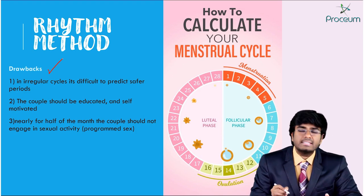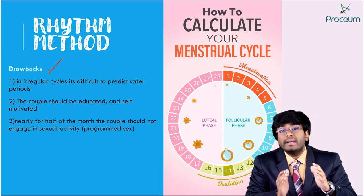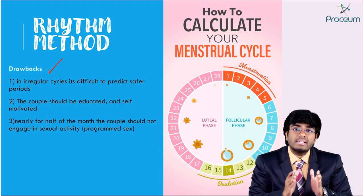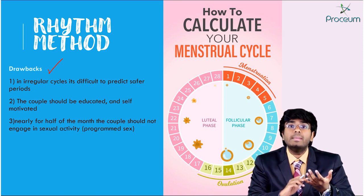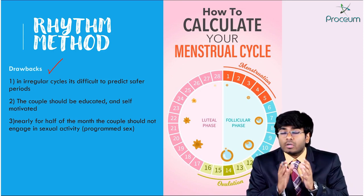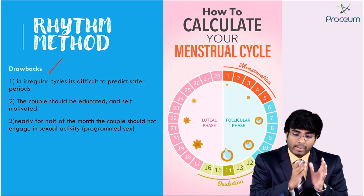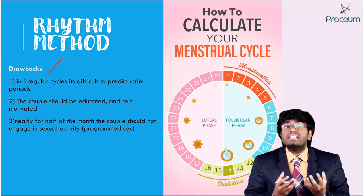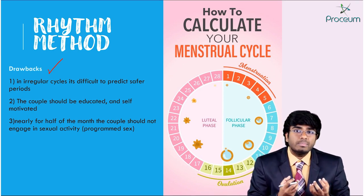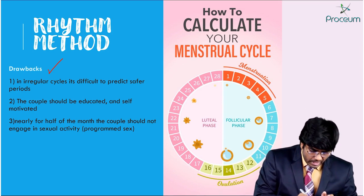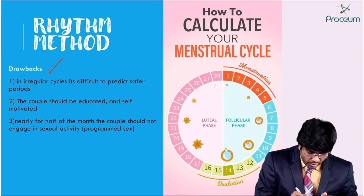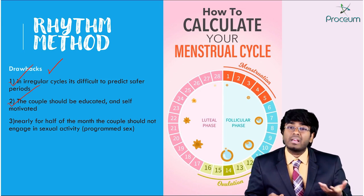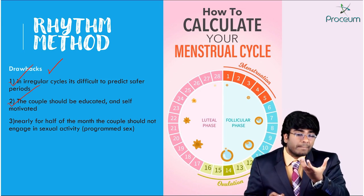The drawbacks of this method include that it is very difficult to predict the safe days. To calculate these safe days, the partners should be highly educated and highly motivated — they have to motivate themselves not to indulge in any sexual activity from day 7 to 21. It needs lots of motivation and responsibility. Also, it is difficult to predict the safe period.